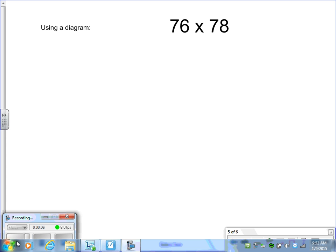To solve 76 times 78, start by creating your diagram and break your numbers into its parts.